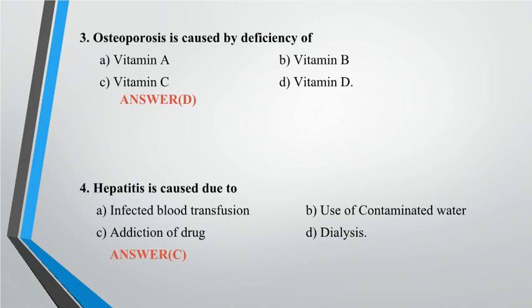Question 4: Hepatitis is caused due to? A. Infected blood transfusion, B. Use of contaminated water, C. Addiction of drug, D. Dialysis. Answer: C.